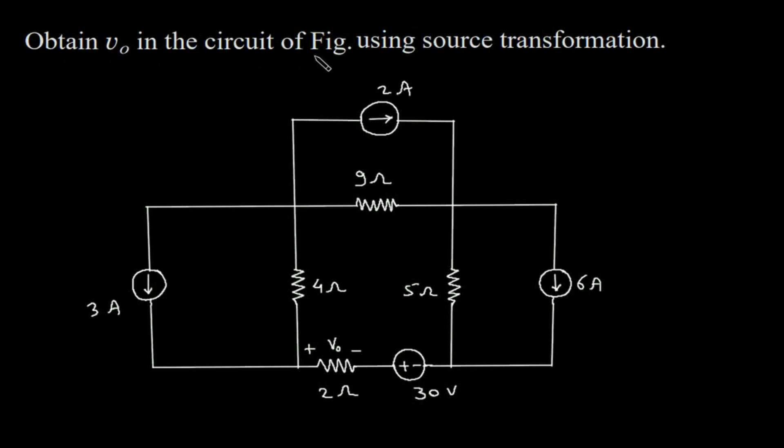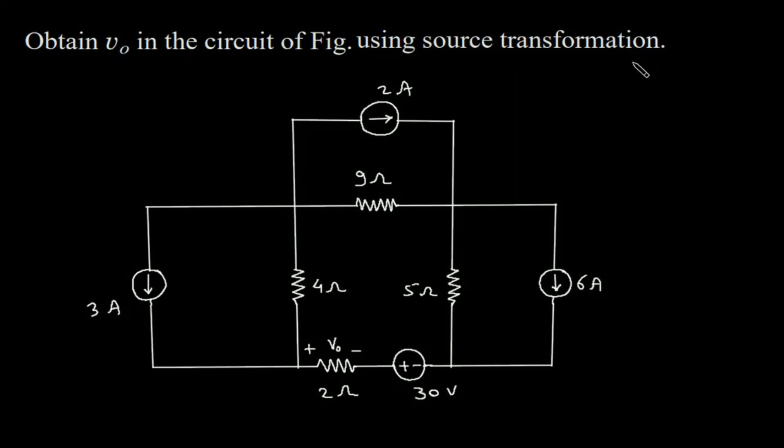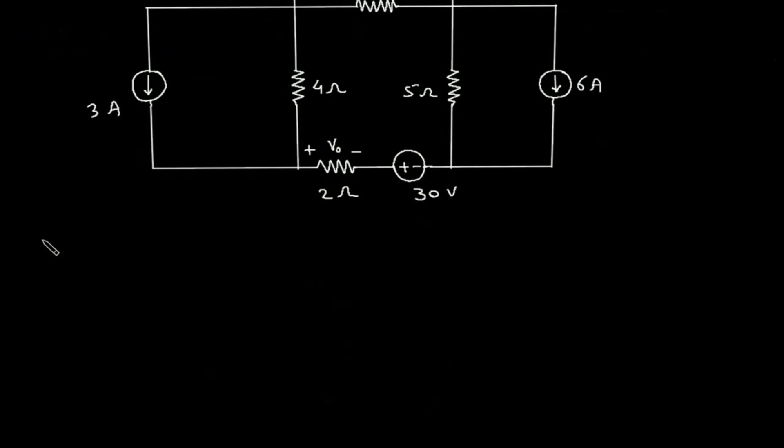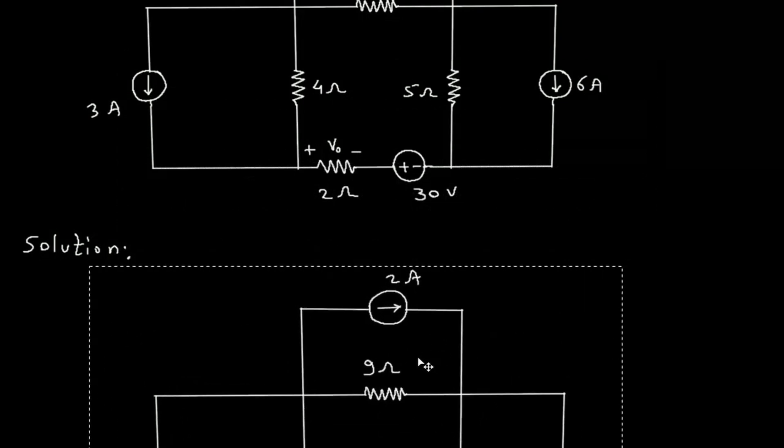Obtain VO in the circuit of the figure using source transformation. We have to find this VO in this circuit using source transformation. Solution: First of all, we will redraw the circuit.